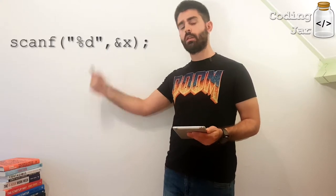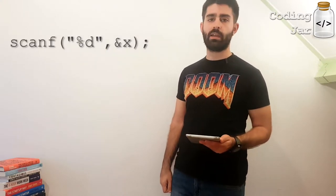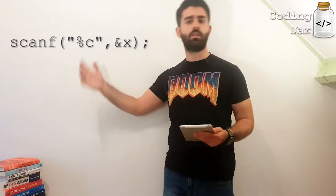So if you wanted to read a decimal, you would go like this, scanf %d. If you want to read a character, you would go like this, scanf %c. And so on. So here's an example.